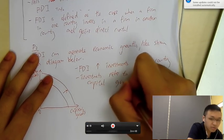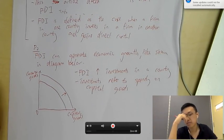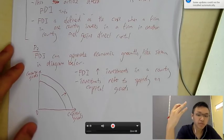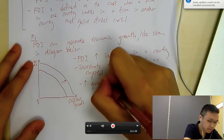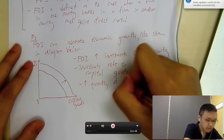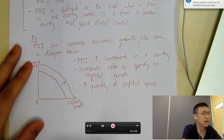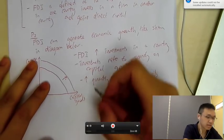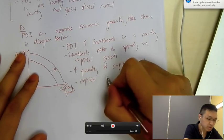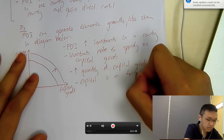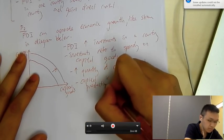So, when foreign firms invest in a country, they will spend on capital goods. So, hence, there will be an increased quantity of capital goods. Higher quantity of capital goods. So, you can say, capital is one of the factor of production. So, hence, the potential output is going to rise. Hence, generating economic growth.